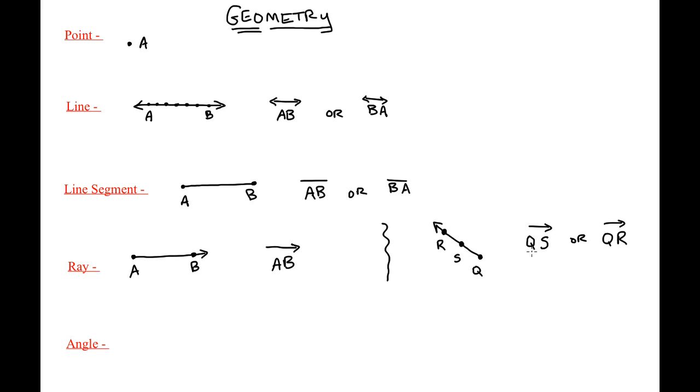And finally, an angle. This is all we'll cover for this video. An angle is basically when two rays come together out of a vertex. The vertex is the corner right here. And that angle—